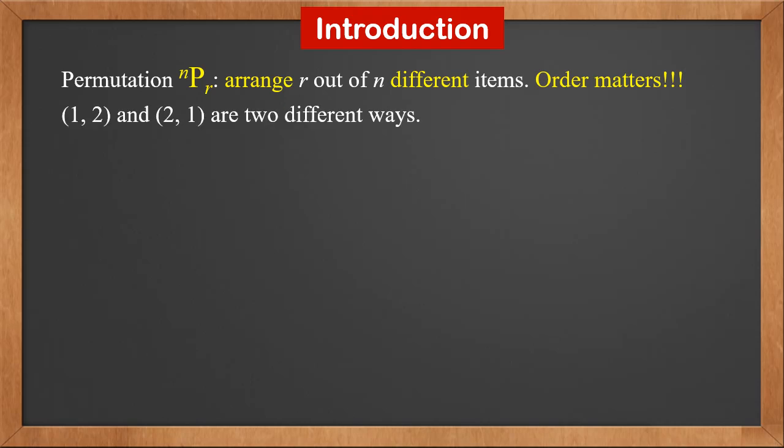This means if two items are taken out of five different items, then one two and two one are two different ways.